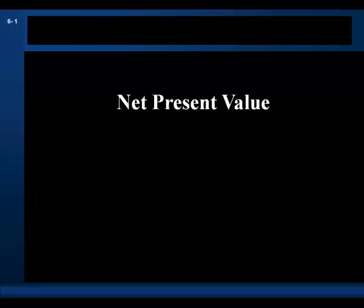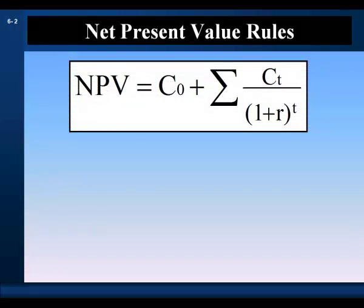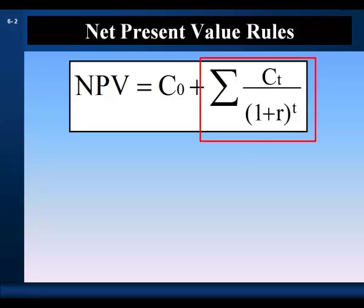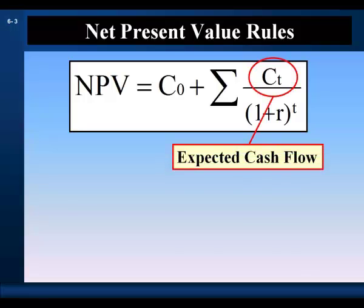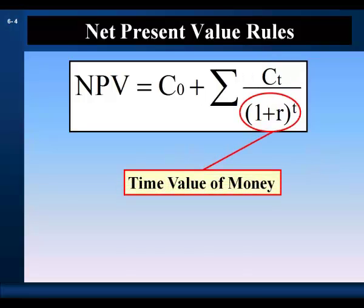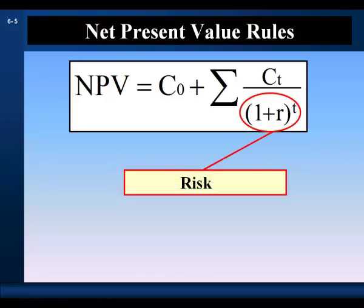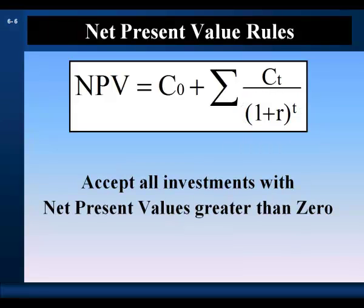Net Present Value identifies investments worth more than they cost and is an absolute measure of the dollar impact of an investment on wealth. As a decision rule, it estimates the current market value of the project, forecasts expected future cash flows, and uses those cash flows in the assessment. By discounting cash flows by a market-required rate of return, it takes into account the time value of money. By discounting at an appropriate opportunity cost of capital, it accounts for how risk affects the value of the project.